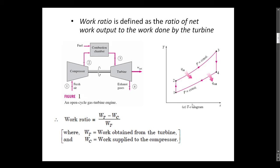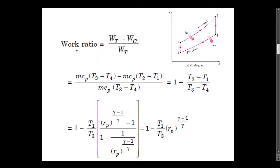This is the T-S diagram for the gas turbine cycle. The work ratio as we have defined is written in terms of WT and WC. Now, we can write WT is equal to mCp(T3 minus T4), which is the reversible adiabatic expansion in the turbine, minus the reversible adiabatic compression process in the compressor, which gives mCp(T2 minus T1).